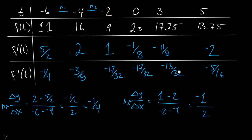So the big message: to get f prime of x, for the inner points you use the slope of f of x and averages of slopes — so to get this 2, I take the average of the slope here and the slope here. And for f double prime, you're doing the same thing, except with the slope of f prime — the average of the slope here and the slope here.